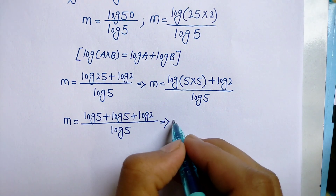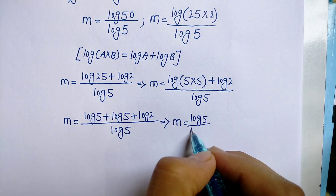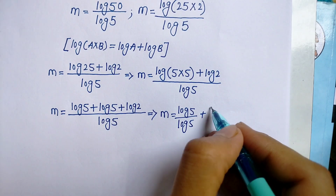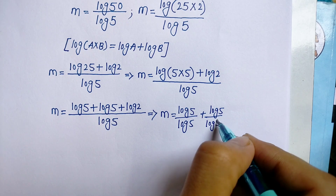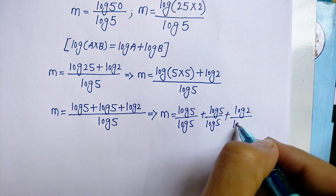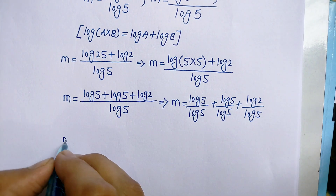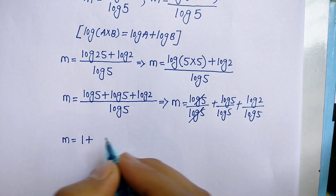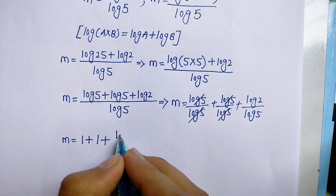Now we split this into separate fractions: m is equal to log 5 upon log 5, plus log 5 upon log 5, plus log 2 upon log 5. The log 5 over log 5 terms each cancel to give 1, so m is equal to 1 plus 1 plus log 2 upon log 5.